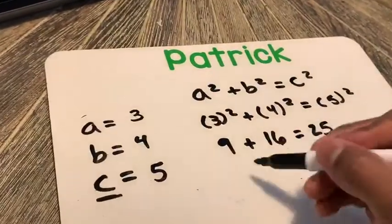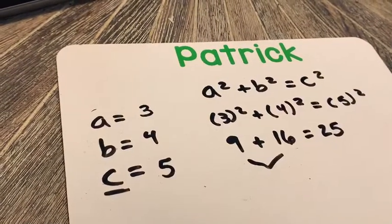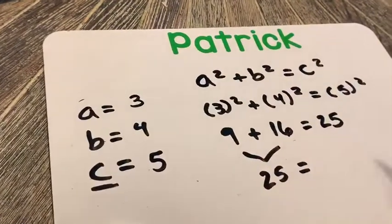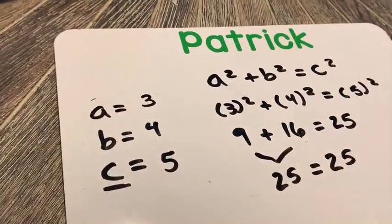The next thing that we need to do is add these values up. 16 plus nine or nine plus 16, same thing. It's 25. And 25 does equal 25.